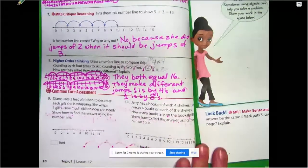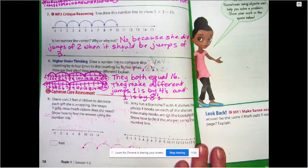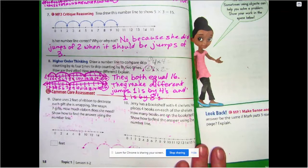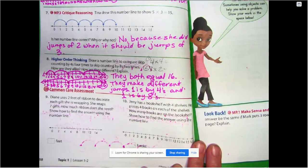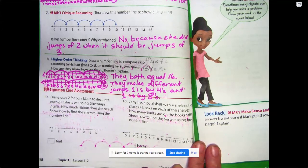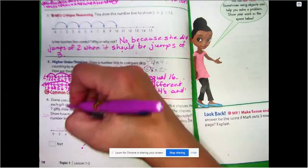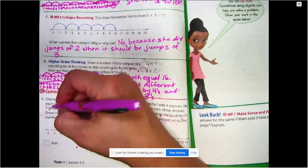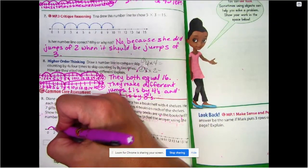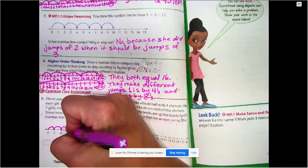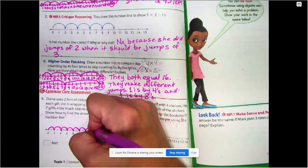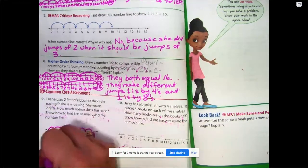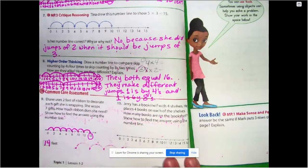Pause, pause, pause if you need to. All right. Number nine. Diane uses two feet of ribbon to decorate each gift she is wrapping. She wraps seven gifts. How much ribbon does she need? Show how to find the answer using the number line. Okay. We're going to be jumping twos, jumps of two, and we're going to do it seven times. So there's one, two, three, four, five, six, seven. Fourteen feet of ribbon.